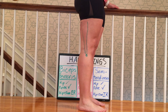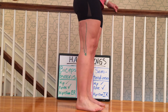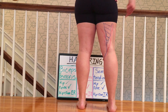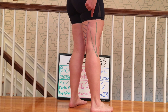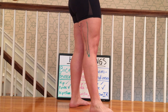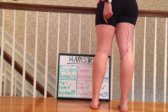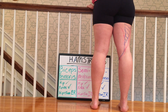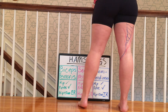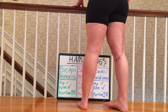All three hamstring muscles help with hip extension and knee flexion. However, the biceps femoris, shown in green, is more on the lateral aspect and helps with hip and knee external rotation. The semitendinosus is shown in blue and the semimembranosus is shown in pink. The semimembranosus is deeper than the semitendinosus, and both of these will help with hip and knee internal rotation.